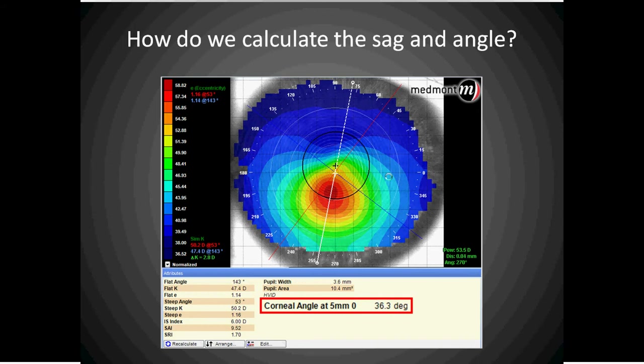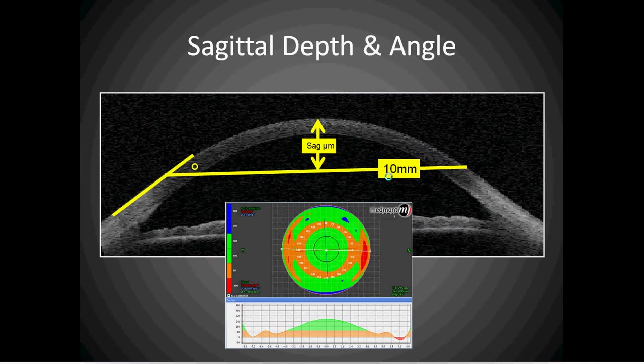Therefore a rigid contact lens can be predicted to fit well past the cornea. This is the unique feature of the Medmont software — it allows a scleral lens with diameters that fall well past the measured placido reflection to be predicted for their bearing and lift 360 degrees around.